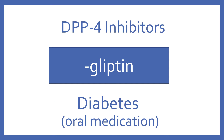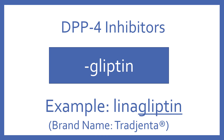DPP-4 inhibitors end with the suffix -gliptin. A DPP-4 inhibitor is an oral medication for diabetes. An example of a DPP-4 inhibitor is linagliptin, and its brand name is Tradjenta.